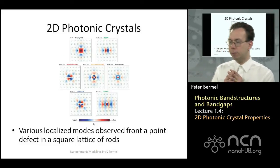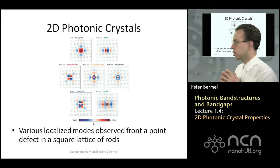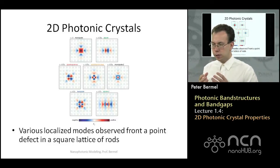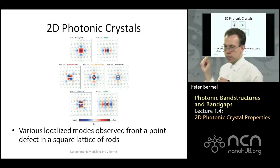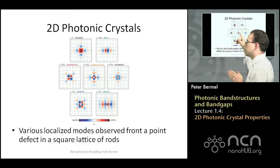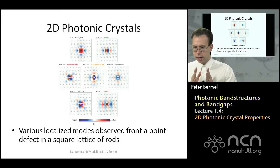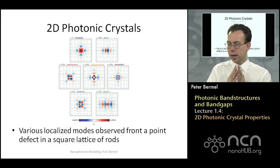Looking at field profiles when rods are removed or modified: completely removing the rod gives a monopole-like mode. Making the rod slightly smaller gives a dipole mode. Increasing the rod size further gives quadrupole modes — two that are degenerate in energy — and then another monopole mode, and eventually hexapoles or other dipoles. There is actually a rich variety of localized modes that can be created with a square lattice of rods or other photonic crystals.